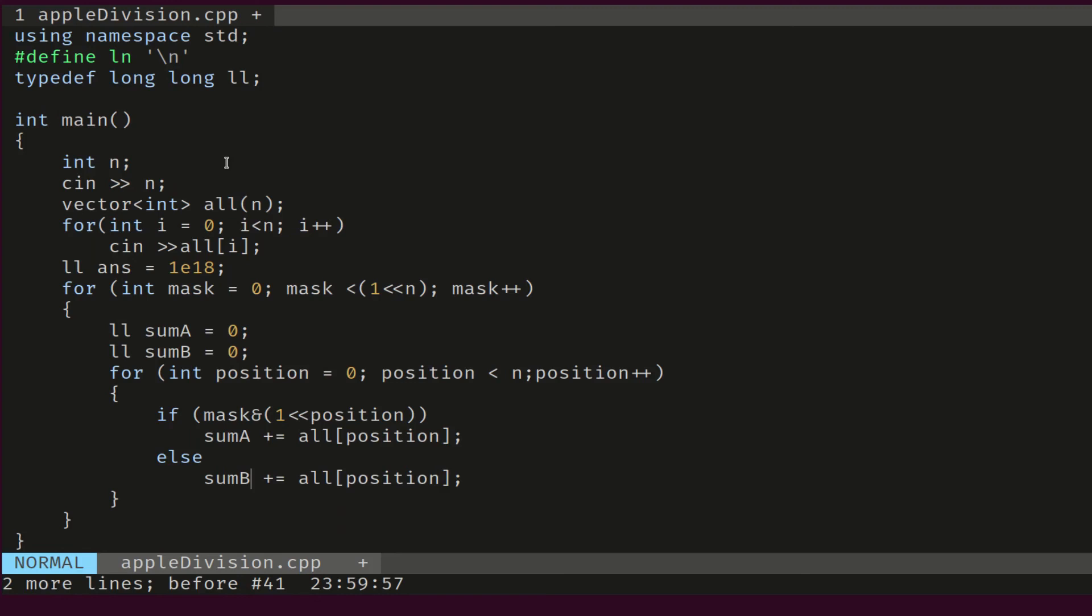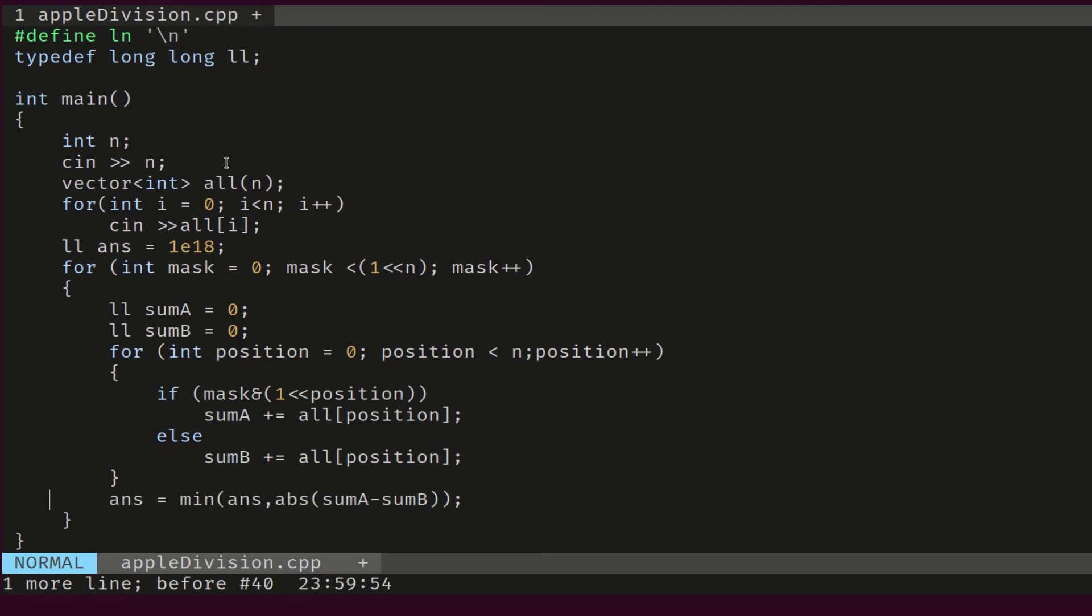Once we are done with this mask, we will need to update our answer with the absolute value of the difference. Here, we are using the absolute value because we don't know whether sum A will be larger than sum B or the opposite, so we just use abs here to avoid dealing with special cases.